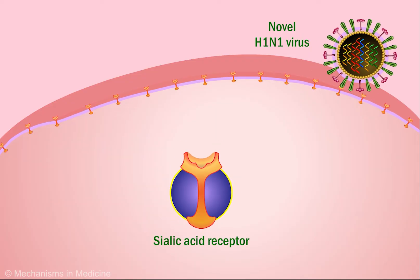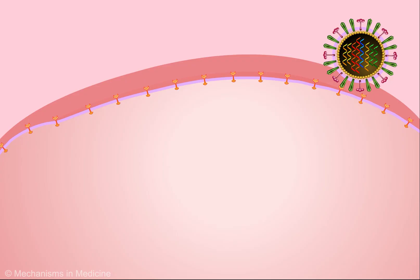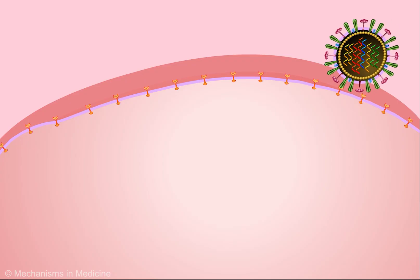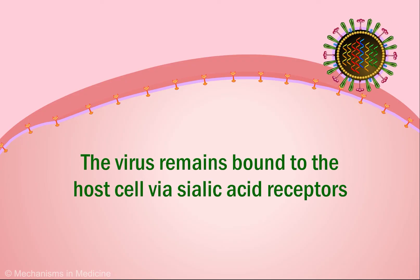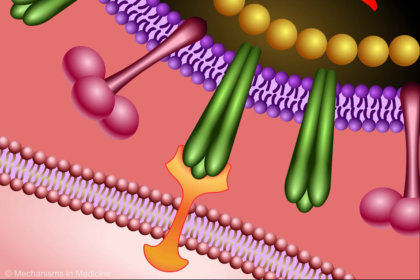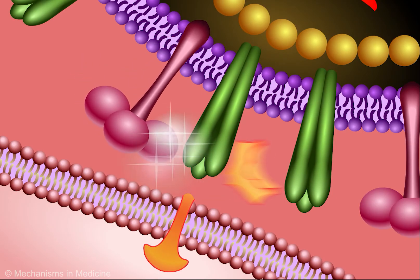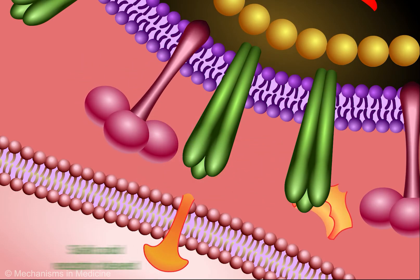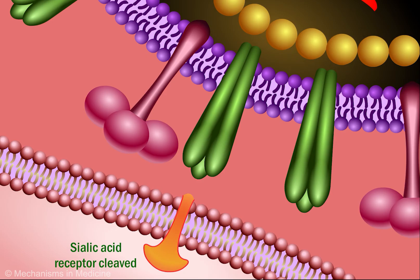The sialidase action of neuraminidase on sialic acid receptors is crucial for the newly formed virus's release, which would otherwise rebind viral hemagglutinin, keeping it attached to the host cell's surface. In the absence of antibodies or neuraminidase inhibitors, neuraminidase cleaves sialic acid receptors on the host cell's surface, allowing viral release and subsequent colonization.